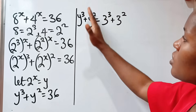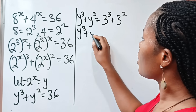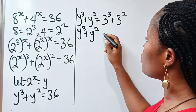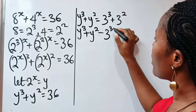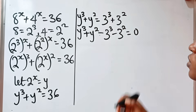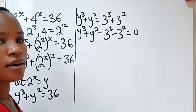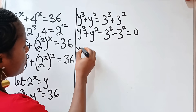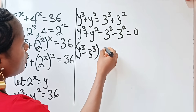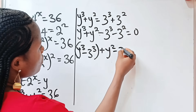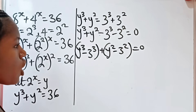Now let us bring this to this side of the equation. If we do that, we have y to the power of 3 plus y to the power of 2 minus 3 to the power of 3 minus 3 to the power of 2 is equal to 0. Now let us collect like terms. If we do that, we have y to the power of 3 minus 3 to the power of 3, plus y to the power of 2 minus 3 to the power of 2, is equal to 0.